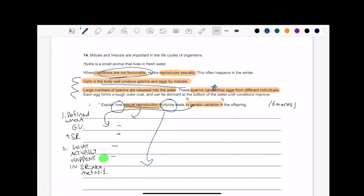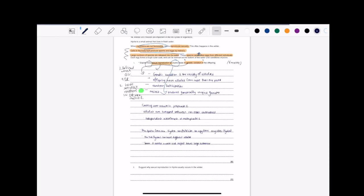One, define genetic variation and sexual reproduction. Two, explain how meiosis occurs. And three, link it back to the question, say specifically about points that the Hydra actions do. But what do they do that causes genetic variation, a.k.a. talk about the information that was written in the question. So let me write this up.